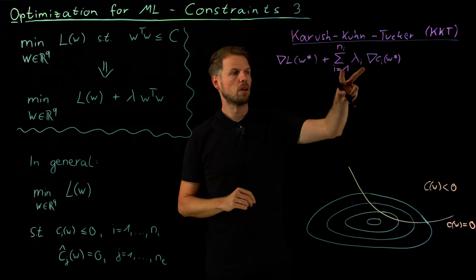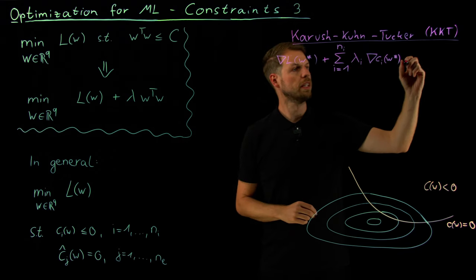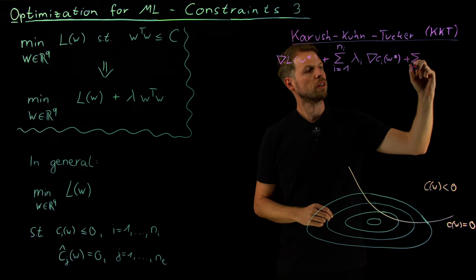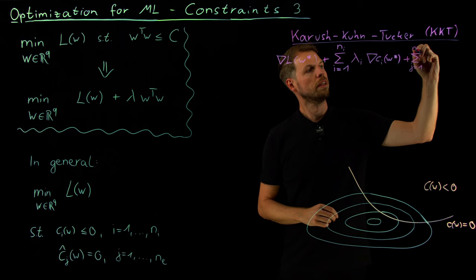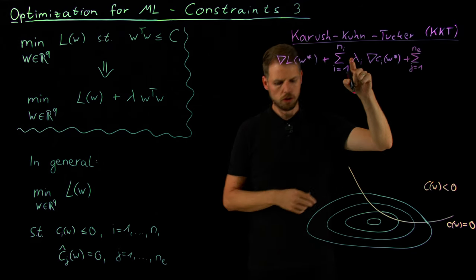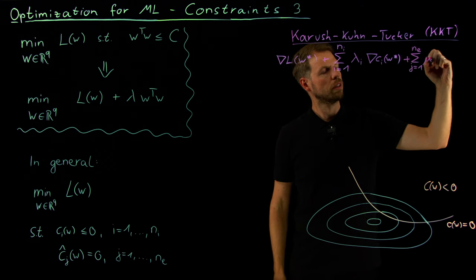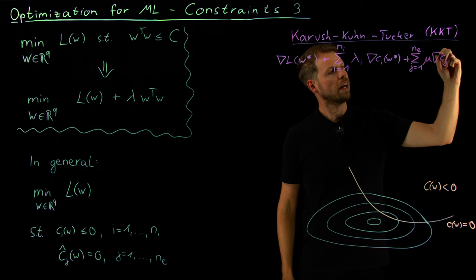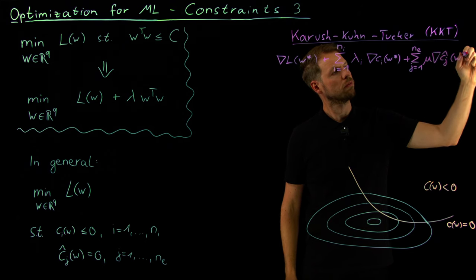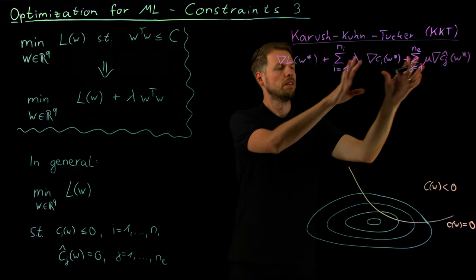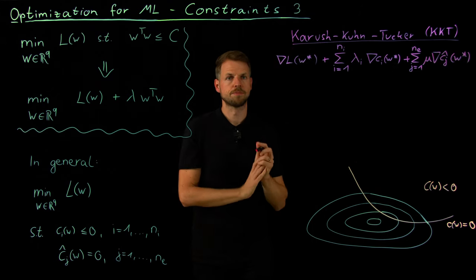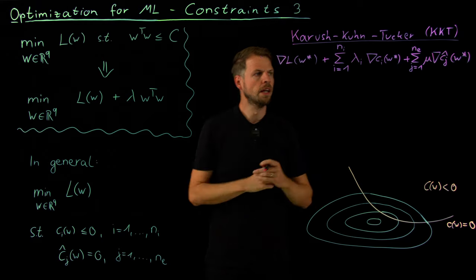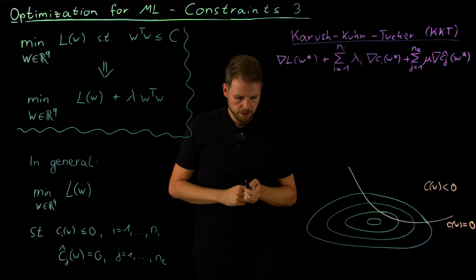But this is only half the truth, we now only have the inequality constraints. So what I need is a second sum, j going from 1 to n_e, so the number of equality constraints. And it looks basically in the same way. So we have a mu here. And then we have, again, the gradient of the c_j hat of w star. So you see, very, very similar structure. And I'm going to tell you in a second why there are more conditions, this is why I left some space here, why these differ in the end.